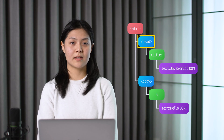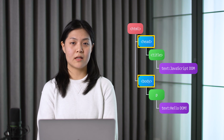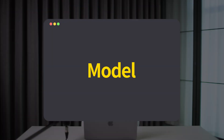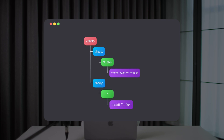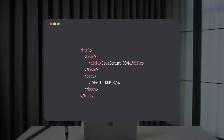Head tag is an object. Body tag is also an object. Let's see what model means. It basically describes how these objects lay down in a document. Model is some kind of hierarchy tree.